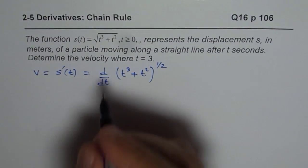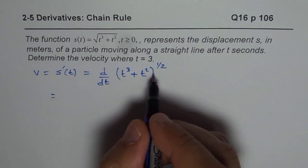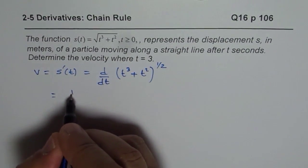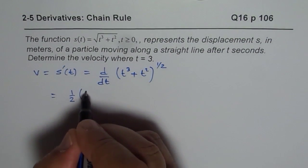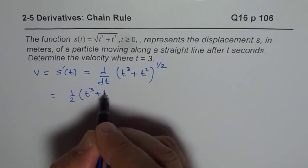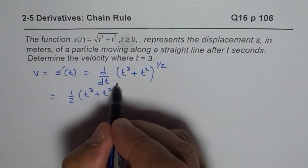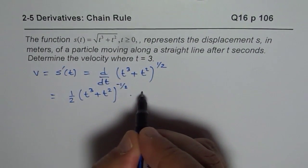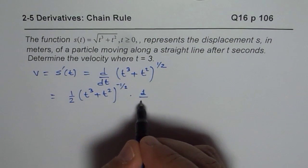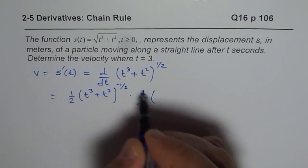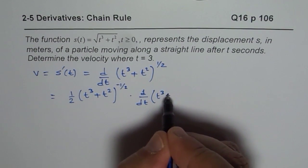This derivative is half of t cube plus t square to the power of half minus 1, which is minus half, times derivative of inside function. So d dt of t cube plus t square.